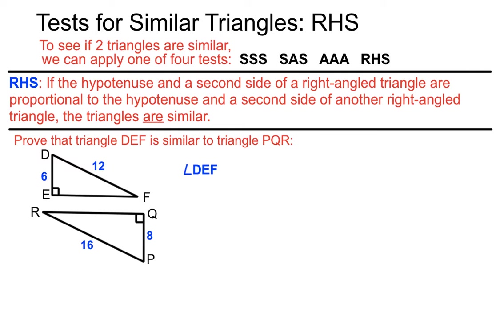Angle DEF is a 90 degree angle as is angle PQR. We'll name them carefully with the vertex of the angle, the corner of the angle in the middle, the letter for that. The E is in the middle and the Q is in the middle. So we have that and we're saying that they're both 90 degrees so therefore we could call them right angles. That's given to us in the question.